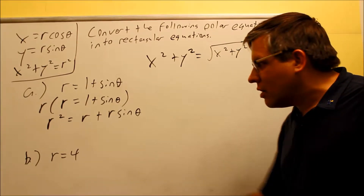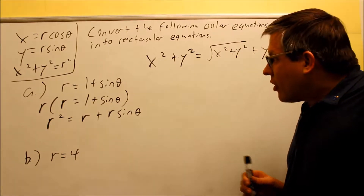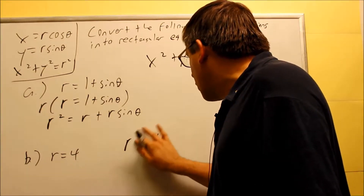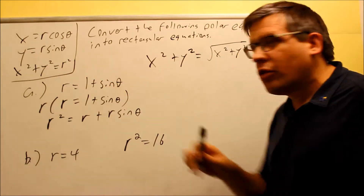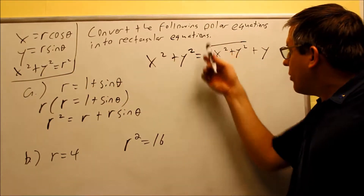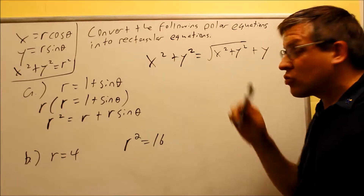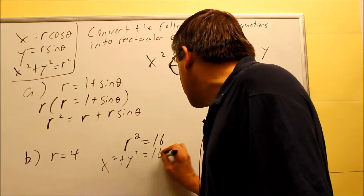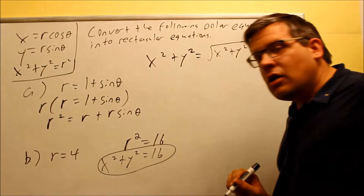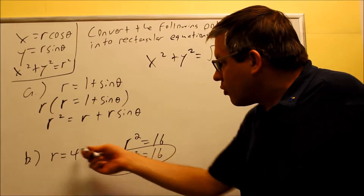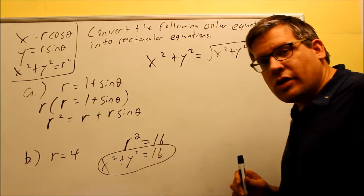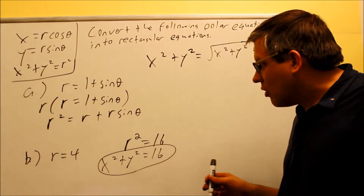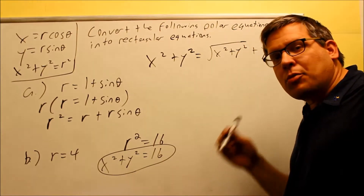Now let's take a look at part B. B is r equals 4. I could put in the square root, but instead I'm going to square both sides of the equation. The only reason I want to square it is so I can put in x squared plus y squared directly without worrying about a square root. So squaring both sides gives x squared plus y squared equals 16, which is just the equation for a circle centered at the origin with radius 4.